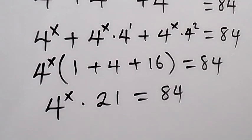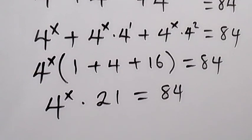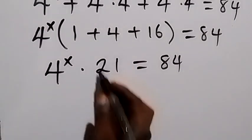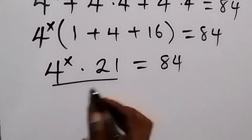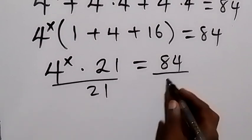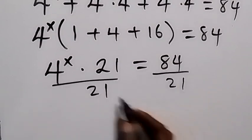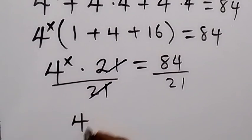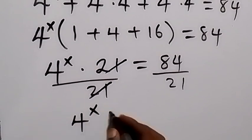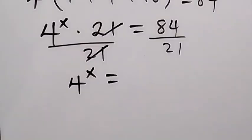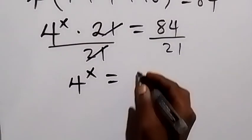We divide both sides by 21 to isolate 4 raised to power x. The 21s cancel, and we have 4 raised to power x equals 84 divided by 21, which gives us 4.